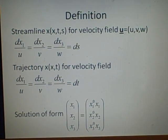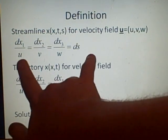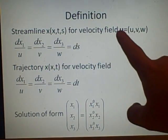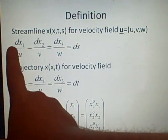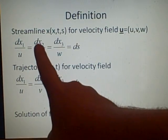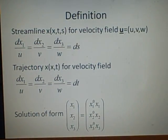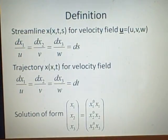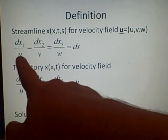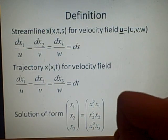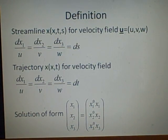We've got a definition here. When you have a velocity field u with u, v, w, then this is our streamline equation: dx₁, dx₂, dx₃ are all equal. These are our different components, so they could be x, y, z in a lot of cases, and we've got our u, v, w which is from our velocity field, and this is equal to ds.